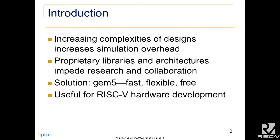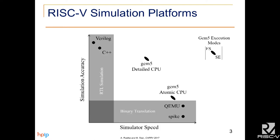This is useful for RISC-V hardware development because most RISC-V simulation options are either high detail but low speed RTL simulation, or high speed but low detail binary translation. Using GEM5's high-level models, it is possible to get higher speeds than RTL simulation but higher levels of detail than binary translation.